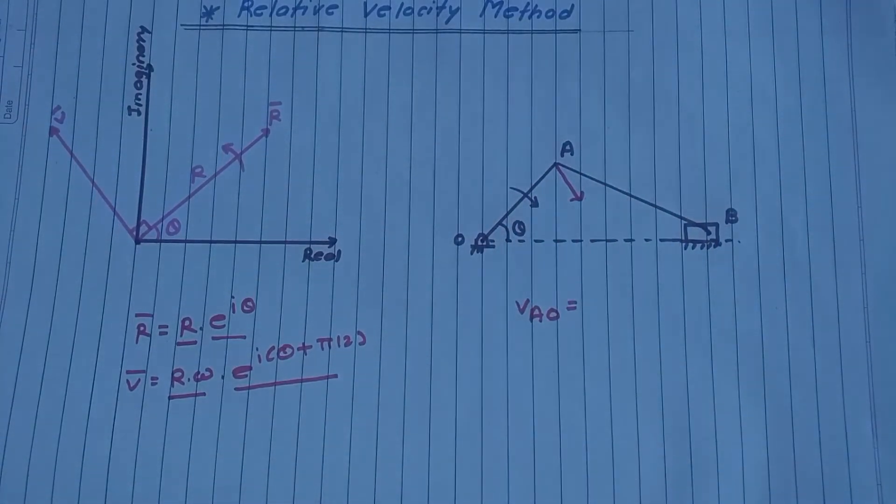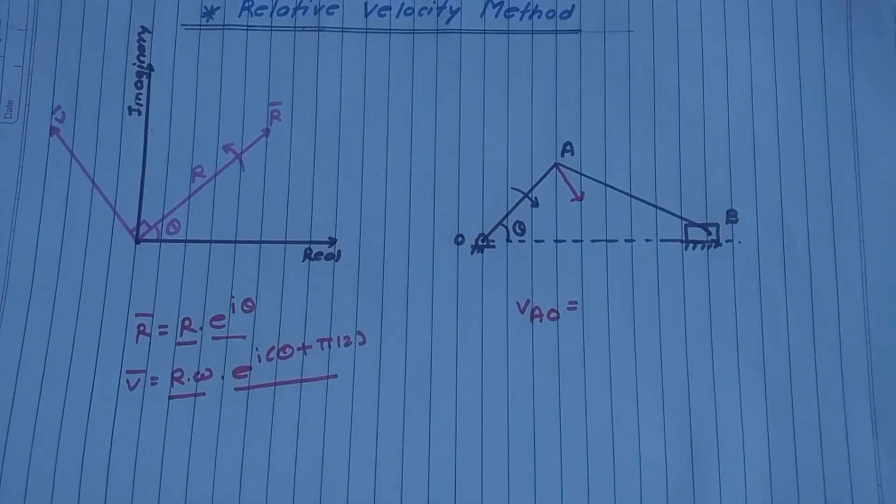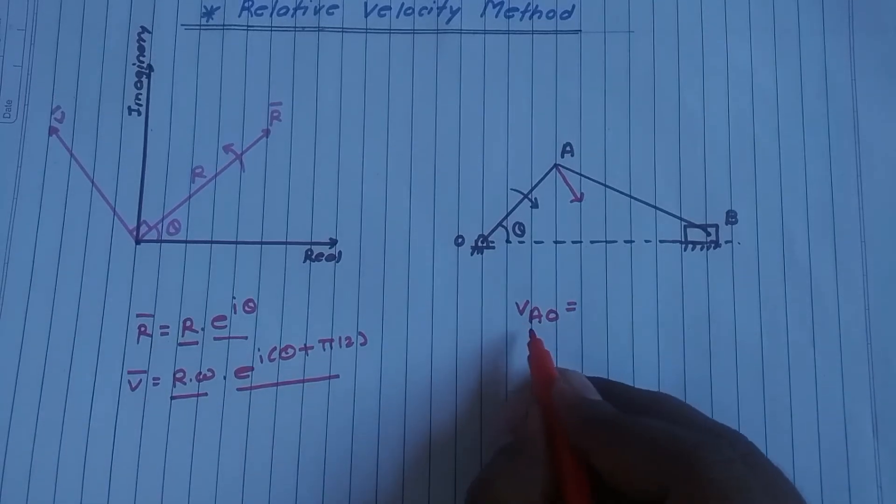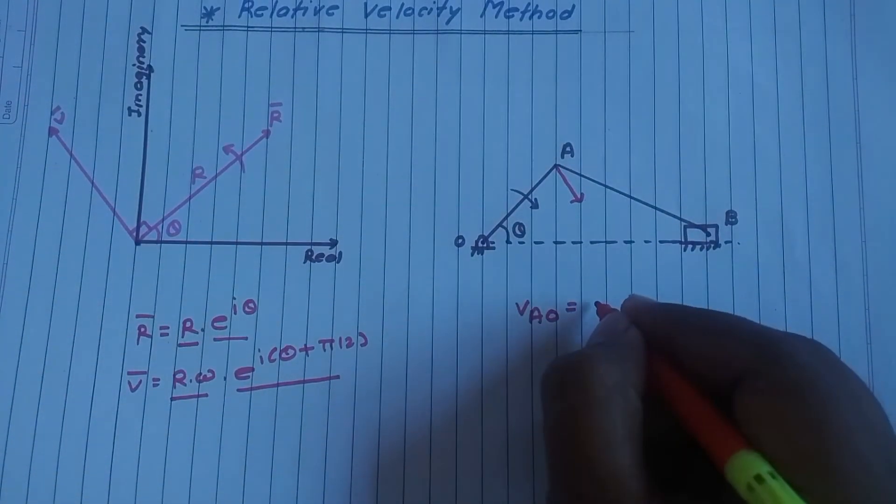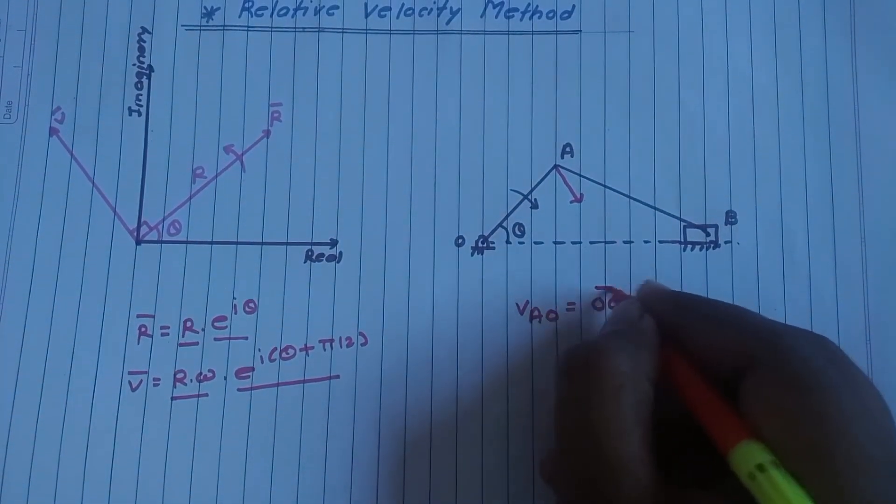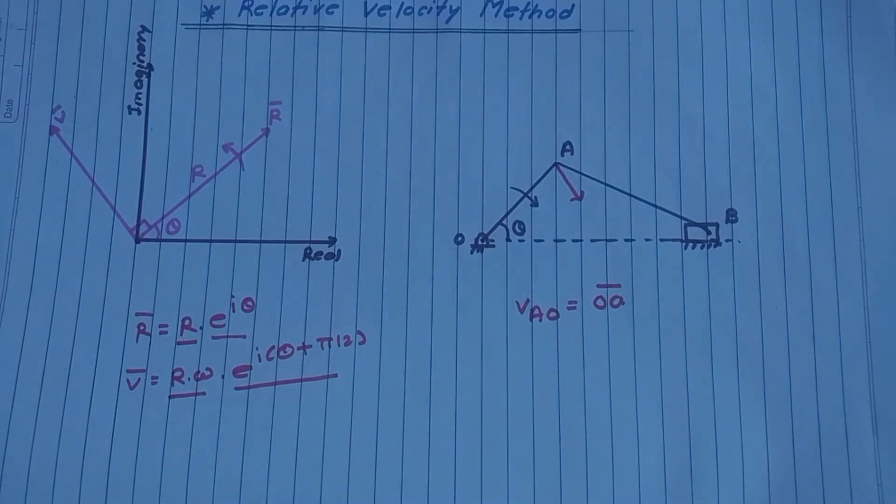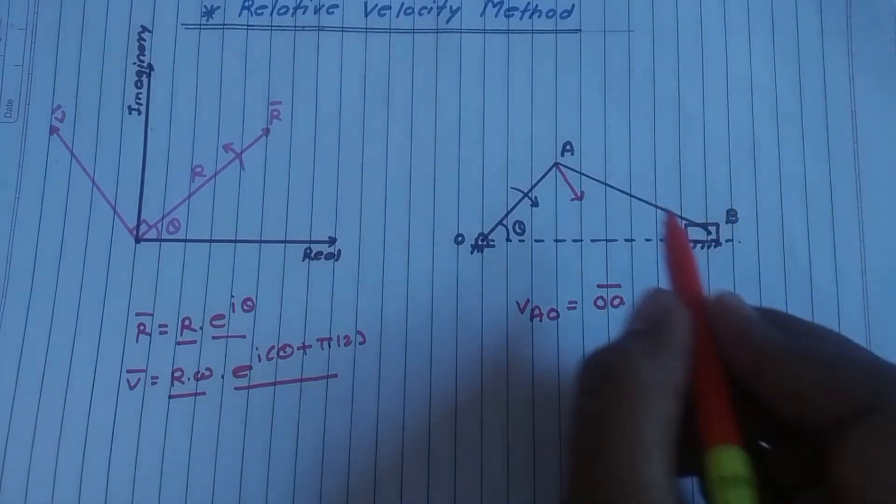Based on that you have to find other values of velocities. This velocity of A with respect to O is written as small OA bar. Next is connecting rod.